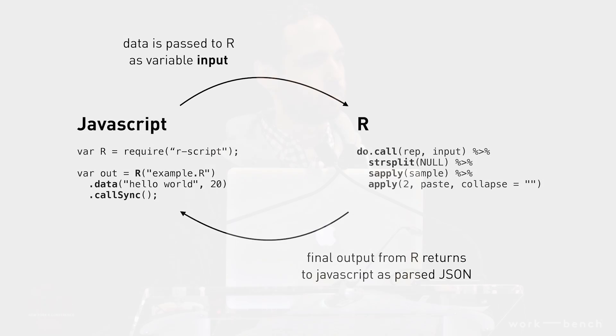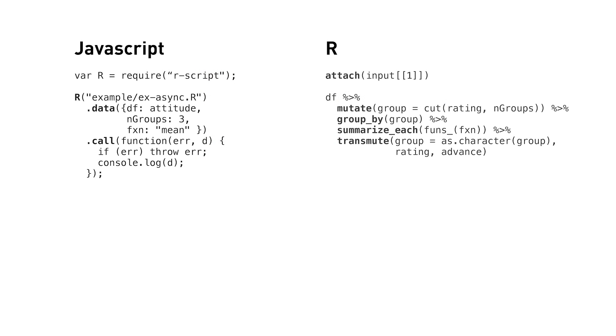From that need came this little Node module called R script. The basic idea: you're starting in JavaScript, and this module lets you pass data to R, and then the final output from your R script gets sent back to JavaScript. It's a relatively simple process — it just makes my workflow easier and means I can do more in R, which I would rather be doing anyway.